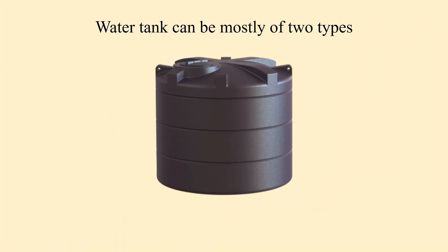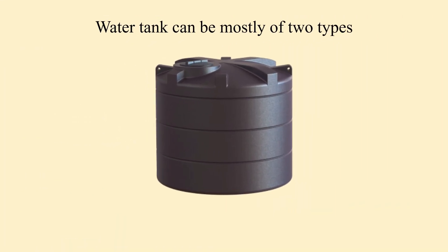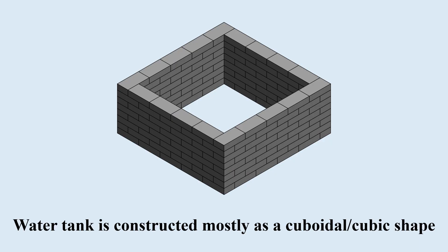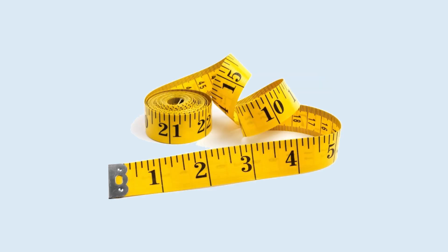A water tank is mostly of two types: cylindrical water tank and cuboidal or cubic water tank. Water tanks are mostly constructed in the shape of a cube or a cuboid. In order to know the capacity of a water tank,